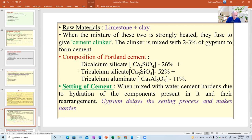That gives you cement. The composition of Portland cement, if you are asked in formula, you have three. Calcium silicate. There are two types of calcium silicate. Calcium silicate Ca2SiO4, then Ca3SiO5. This is called dicalcium silicate. This is called tricalcium silicate, 52%. And tricalcium aluminate, 11%. This is the formula. Setting of cement, when mixed with water, cement hardens due to hydration of the components. Because these components get hydrated. And once it is hydrated, it swells and hardens. Gypsum delays the setting process.